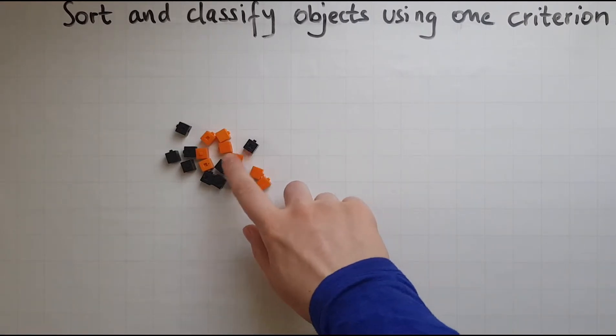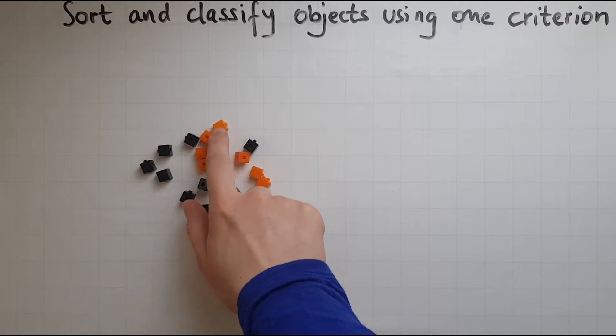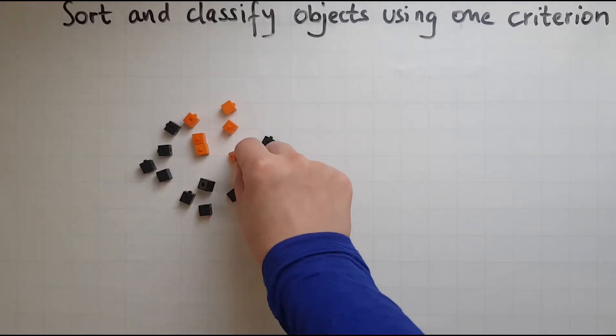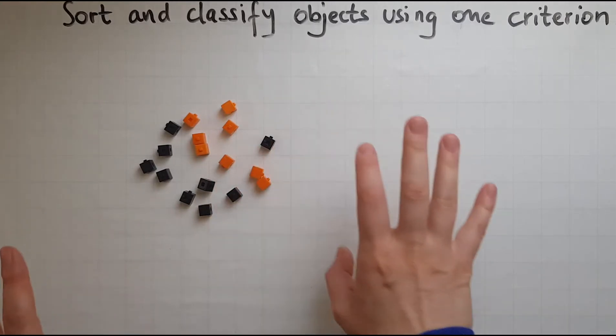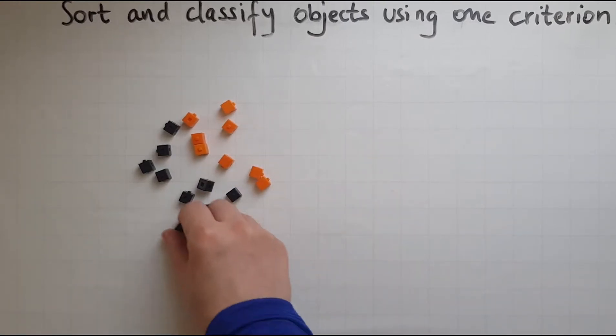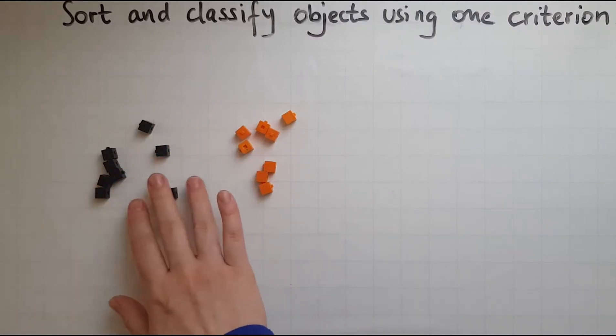I have a number of cubes here and I'll look at what is different between them. They look exactly the same in terms of size but the color is different. So I've got some black cubes and some orange cubes.